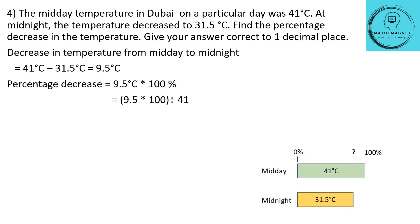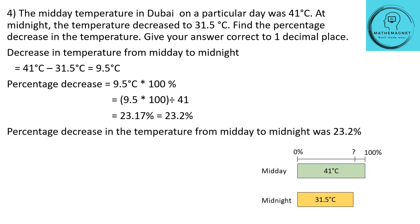For 41 degrees Celsius being 100%, 9.5 degrees Celsius will be 9.5 × 100 ÷ 41, equal to 23.17%, which corrected to one decimal place becomes 23.2%. So the percentage decrease in temperature from midday to midnight was 23.2%.